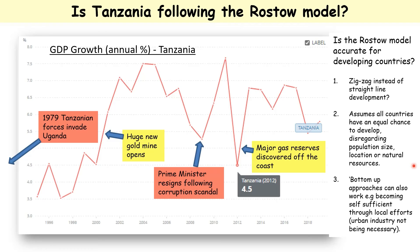There's a big suggestion that the model cannot be applied easily to developing countries - for example, the country could be developing and then industries might have to close down, which could slow development. Finally, there's a feeling that bottom-up approaches can also work, not just top-down approaches, and a country could become self-sufficient through local efforts. Is urban industry actually necessary to develop? So even though there are these question marks, the Rostow model is still one of the most widely cited development theories.